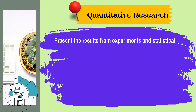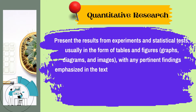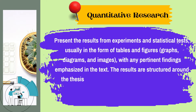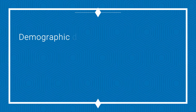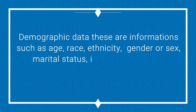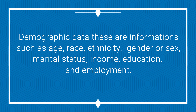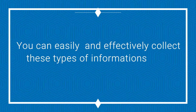Present the results from experiments or a statistical test, usually in the form of tables and figures such as graphs, diagrams, and images, with any pertinent findings emphasized in the text. The results are structured around the thesis question or questions. Demographic data are usually presented first in this section — information such as age, race, ethnicity, gender or sex, marital status, income, education, and employment.